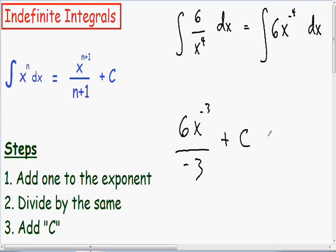So now we have integrated this function. The only thing that we have to do is just simplify this as much as possible. Notice how we have a 6 divided by negative 3. And 6 over negative 3 can be simplified to negative 2. Our x to the negative 3 stays the same.